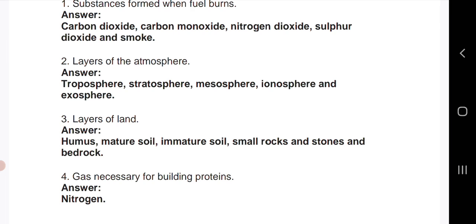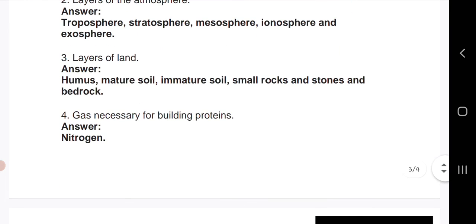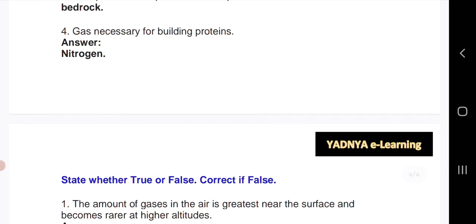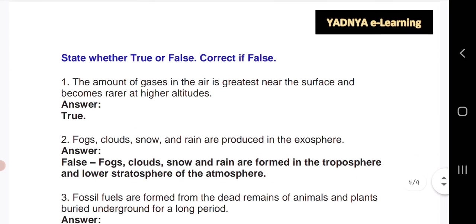Next: layer of land. Humus, mature soil, immature soil, small rocks and stones and bedrock. Fourth one: gas necessary for building proteins. Answer: nitrogen.